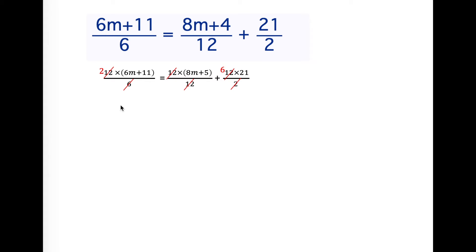2 times (6m+11) is going to give us 12m+22 because the 2 multiplies the 6 and the 11. We have 8m+4 because it's being multiplied by 1. And here the 6 multiplies the 21 giving us 126.